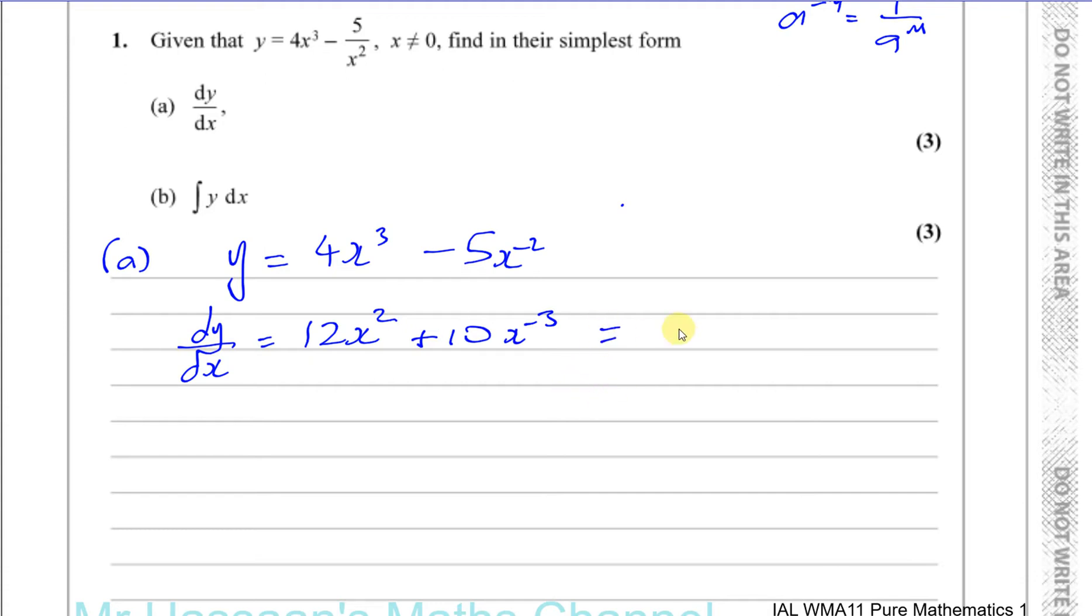You can leave it like that if you wish, or if you want to, you can write it back in this form. And here we have the answer. Either of these two are acceptable. Writing in this form is probably better when you have another part where you have to substitute values in to find the gradient at certain points, whatever. But this is perfectly fine to leave it this way.